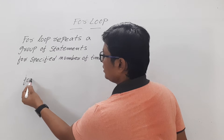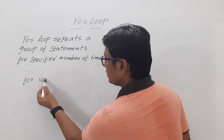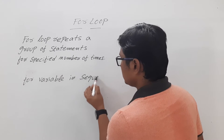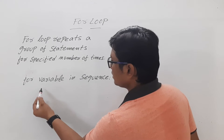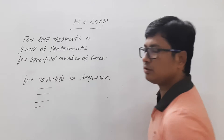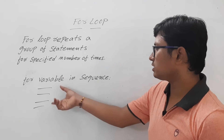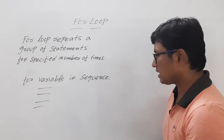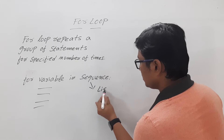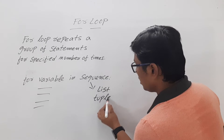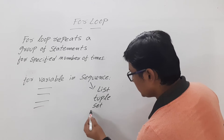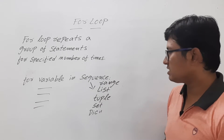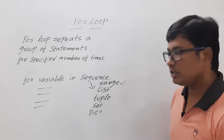The syntax is: for variable in sequence — then indentation starts, and you provide the group of statements you want to execute. The sequence can be a list, a tuple, a set, a dictionary, or it can be a range. The sequence can be a range of elements or elements from a list, tuple, set, or dictionary.